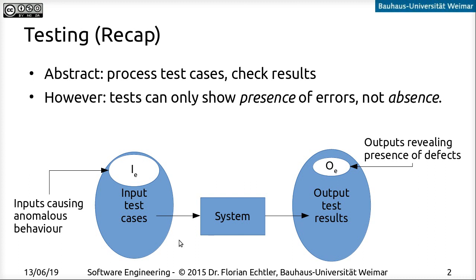To recapitulate, let's say this is the set of all possible input test cases. Of those, we have a subset that somehow causes the system to behave in an unexpected way. In general, we are never able to test all input cases. Even if our input is just a single 32-bit integer, we already have 4 billion possible input values, which is quite obviously not possible to test them all.